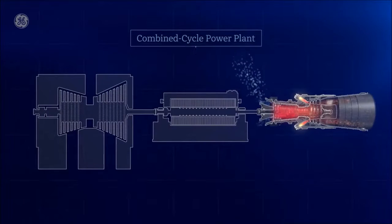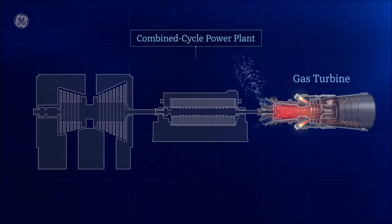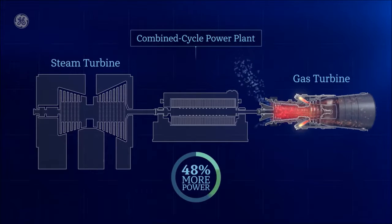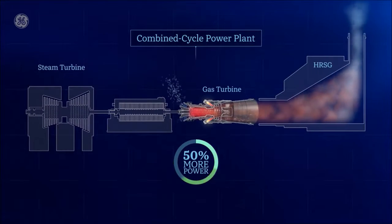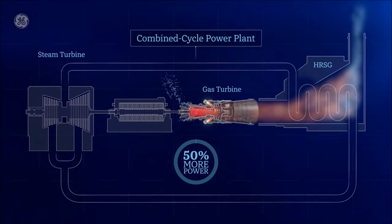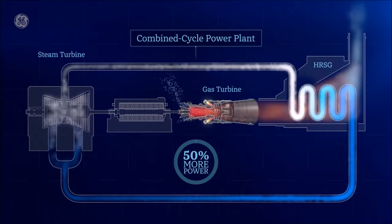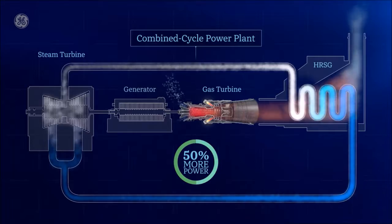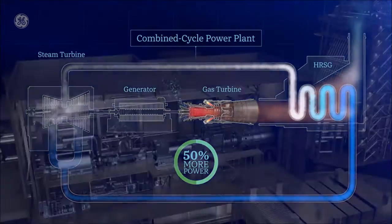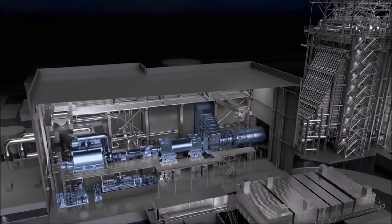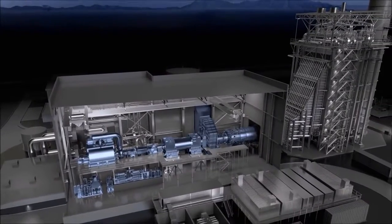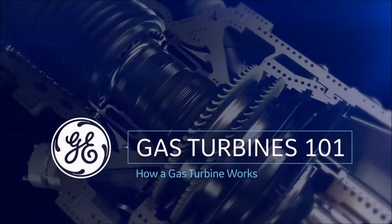In what's called a combined cycle power plant, the gas turbine can be used in combination with a steam turbine to generate 50% more power. The hot exhaust generated from the gas turbine is used to create steam in a boiler, which then spins the steam turbine blades with their own drive shaft that turns the generator. What you end up with is the most efficient system for converting fuel into energy. And that's your GE gas turbine 101.